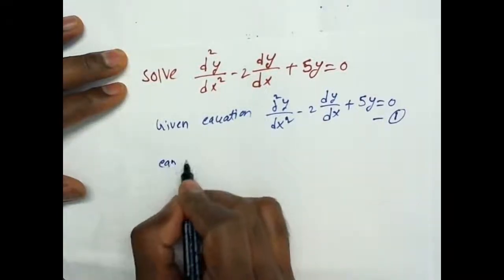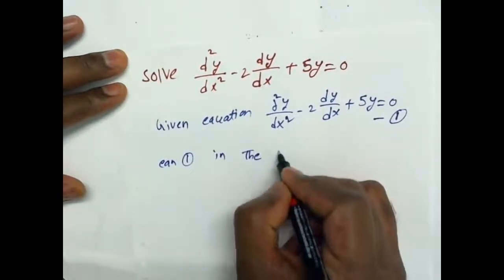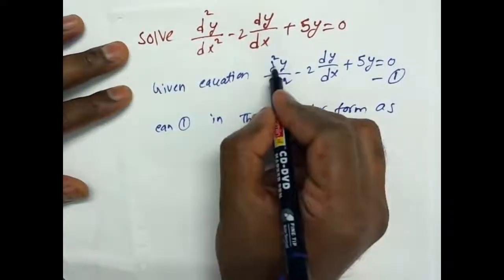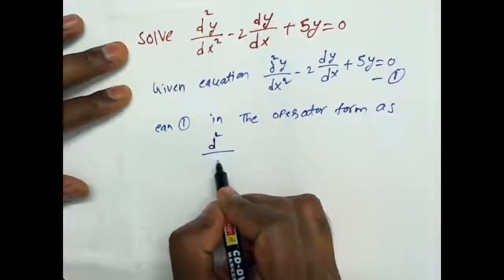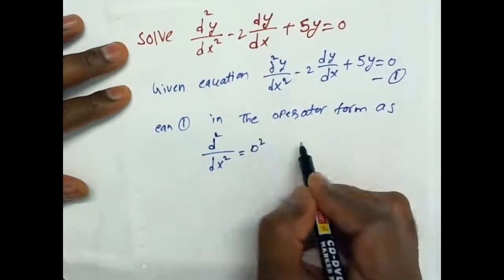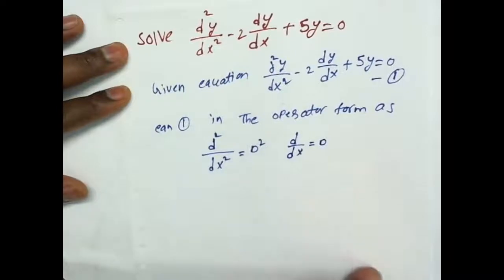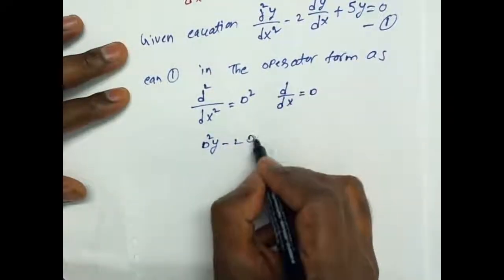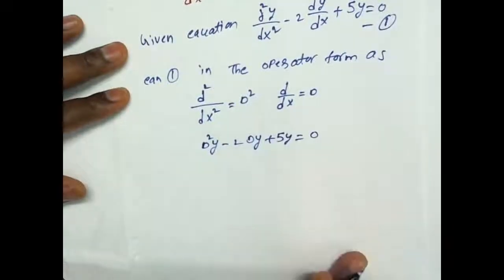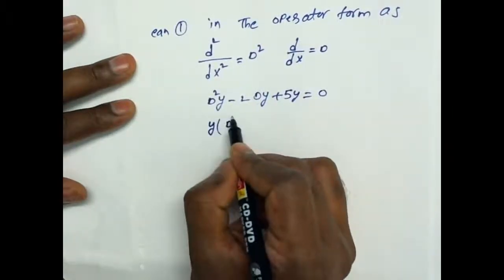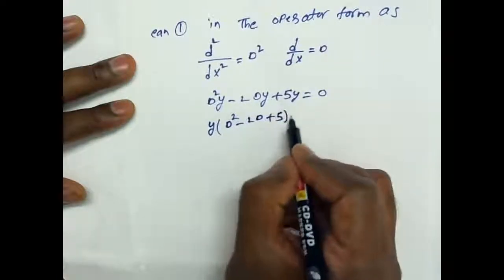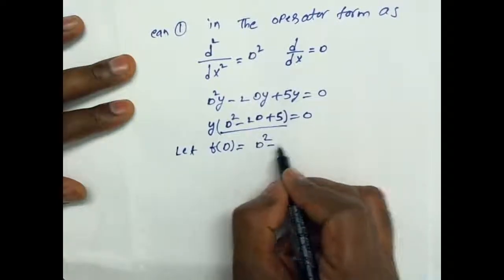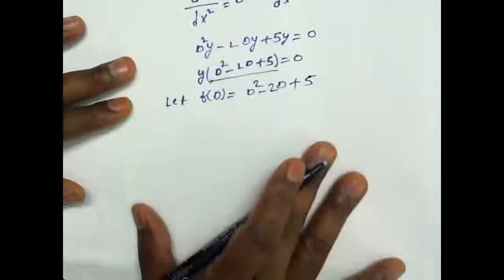This is equation 1. In the operator form, writing d squared y minus 2 into dy by dx plus 5y equal to 0, taking y common, we get d squared minus 2d plus 5 equal to 0.